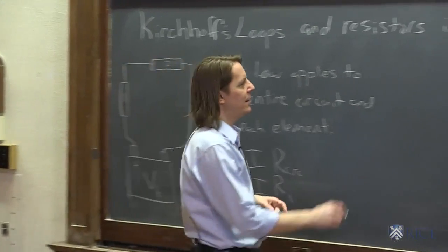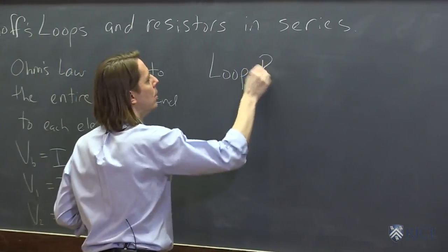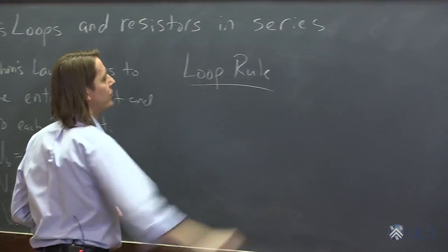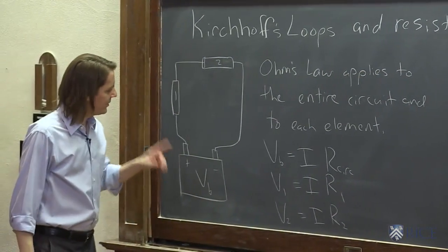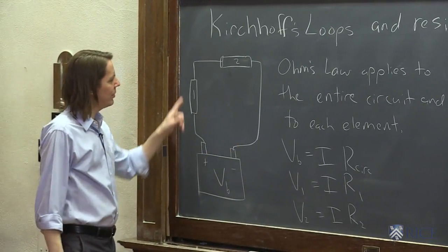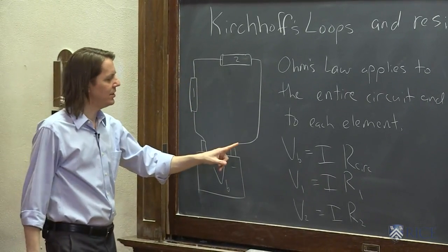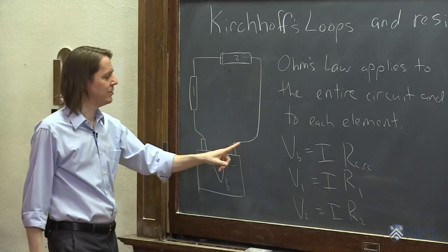And where we get it is from the loop rule. It's Kirchhoff's loop rule, but I don't want to write it again. What it says is that if you go all the way around the loop, the total potential change has to be zero, or the voltage change has to be zero.